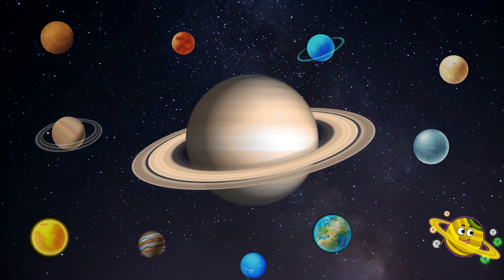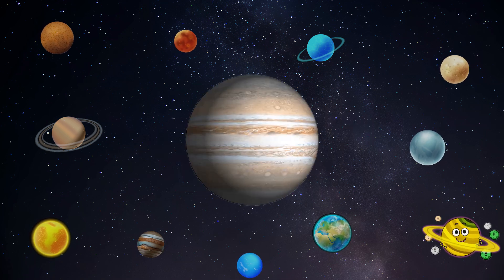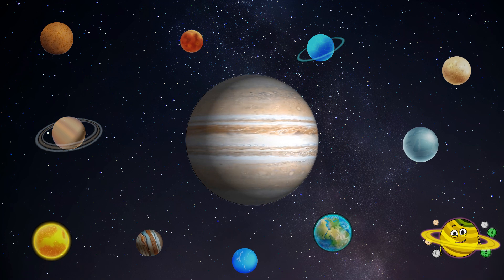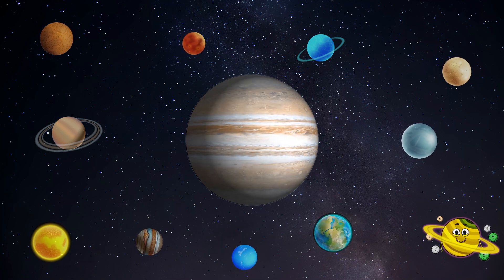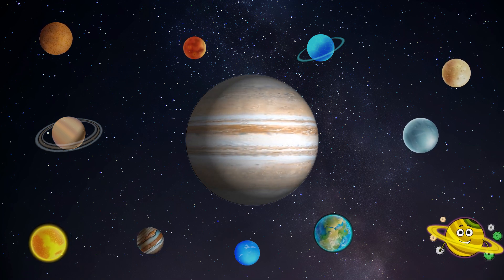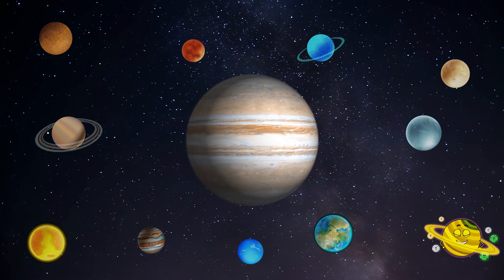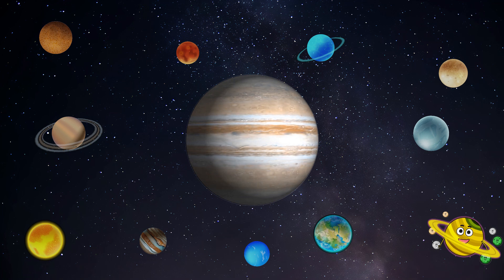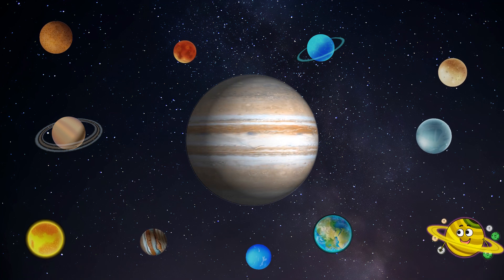Here we find Jupiter, the biggest planet of them all. Jupiter is like a giant ball of swirling colors, with storms bigger than Earth. It's the king of moons too, with lots of them dancing around like little friends. Jupiter is a big friendly giant, always ready to show us its wonders and surprises.